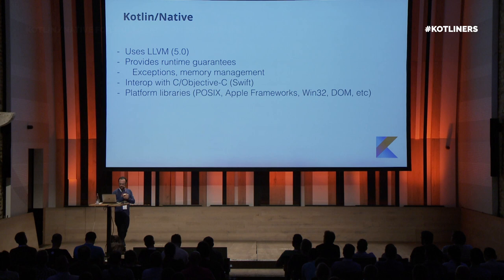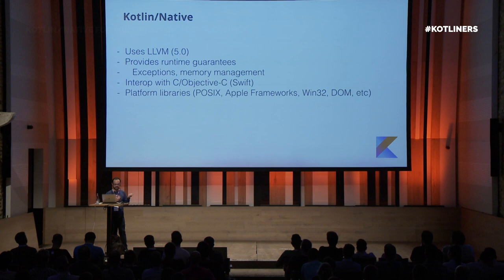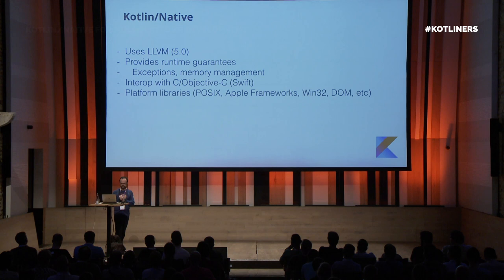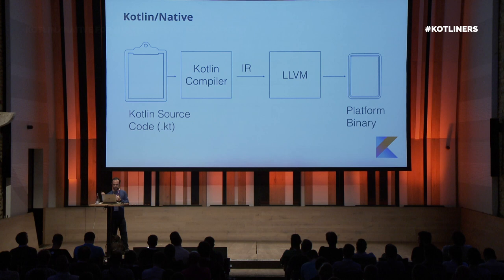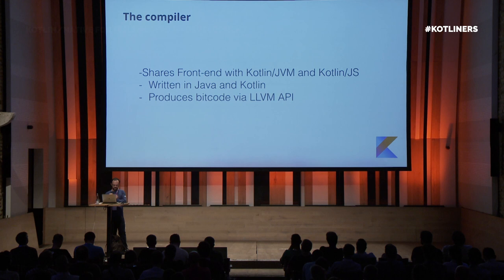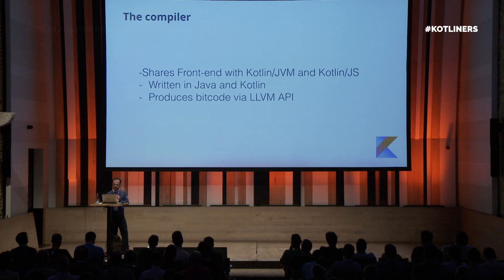Now Kotlin Native. It uses LLVM 5.0 — a collection of modular and reusable compiler technologies. It provides runtime warranties such as exceptions and memory management. It can interoperate with C, Objective-C, and obviously Swift — not with C++, unsurprisingly. It contains platform libraries for things like POSIX, Apple Frameworks, Win32, DOM, etc. It's surprisingly intuitive: we have our Kotlin source file, it goes through the Kotlin compiler to an intermediate representation, then to the LLVM compiler, and compiles into the platform binary. The compiler shares the same frontend with Kotlin JVM and Kotlin JS, and is partially written in Java and Kotlin.